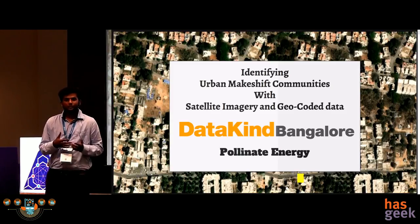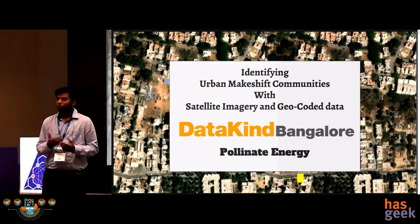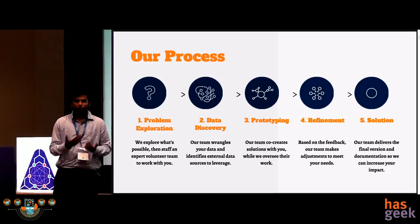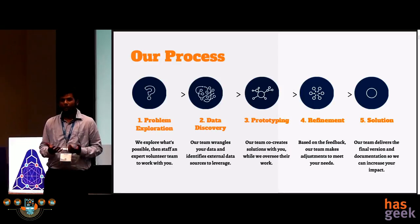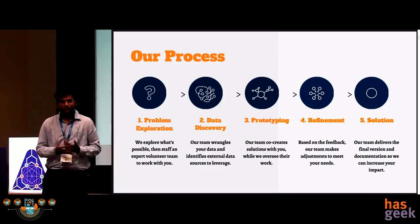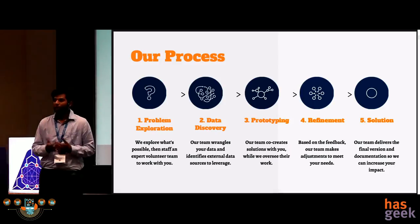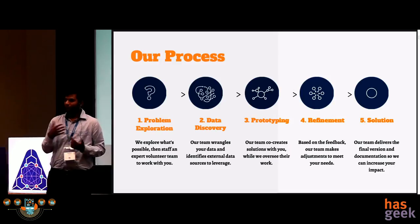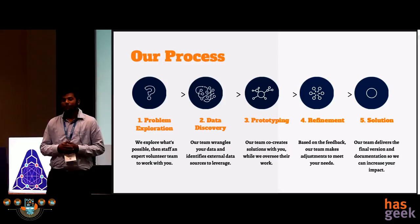DataKind Bangalore is an organization that brings together data scientists with high social change organizations to maximize their impact. Our process involves first exploring the problem statement that the organization is trying to solve to see what their pain points are. Then we take the data to see what it offers and where it lacks, prepare the data, dive in to build prototypes using multiple approaches, meet with the organization to refine our prototypes, and then find and deliver a final solution.